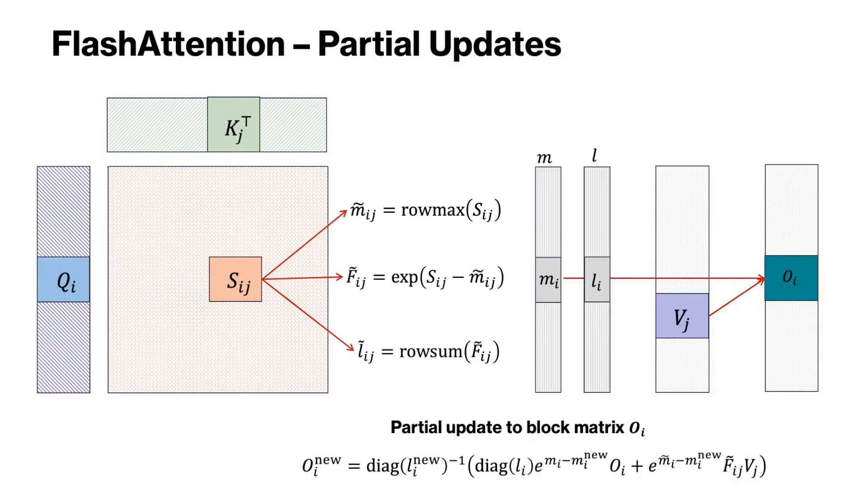Then we adjust the overall max and the normalization factors. The equations for those are not shown here for the sake of space, but you can find them in the paper. And finally, we use the adjusted vectors along with block vj to make a partial update to the block i of output matrix O as shown in this final equation.